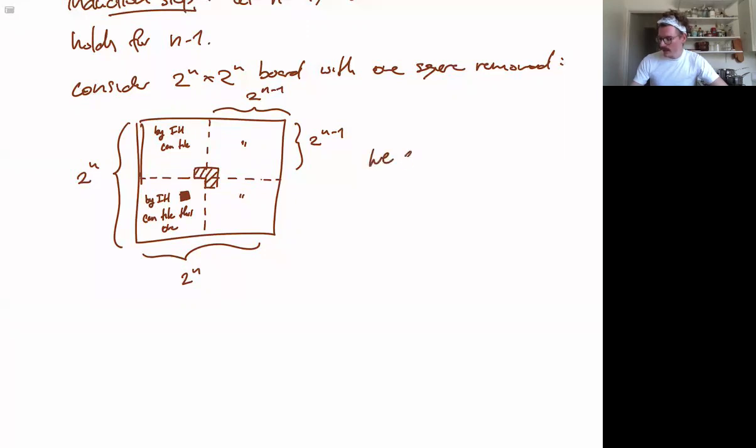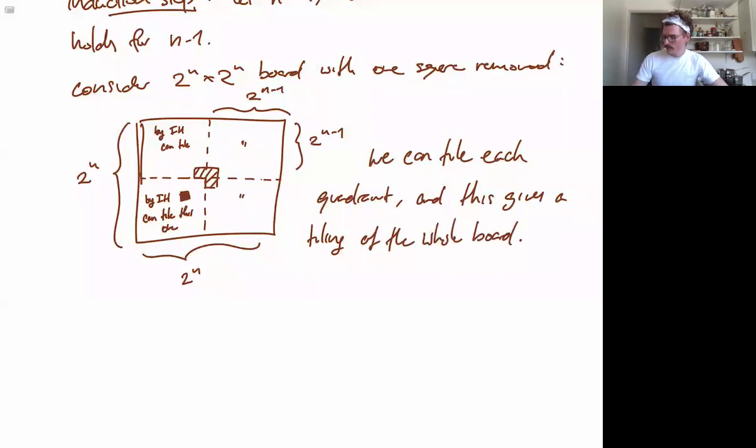So, we can tile each quadrant. And this gives the tiling of the whole board. And that, I believe, completes the induction step and the proof.